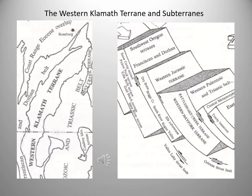The Western Klamath terrain was constructed along the North American margin during the Jurassic Nevadan orogeny, 155 to 145 million years ago. It includes the Smith River, the Rogue Valley, the Briggs Creek, the Dry Butte, and the Elk subterrains. The most important is the Smith River, which has been the focus of considerable attention because of its paleoenvironment and economic minerals.